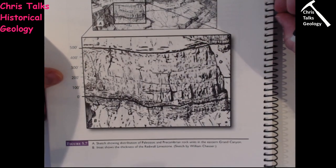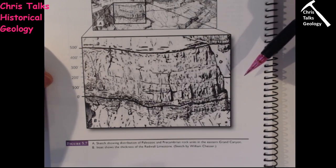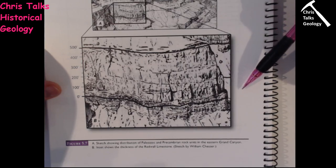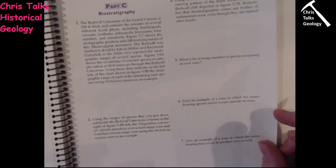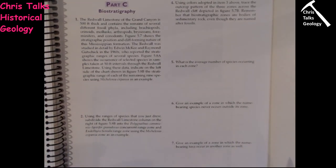Please try to use dark colours when colouring, because lighter colours and highlighters don't show up well on scanned or photographed images. For part five, count the average number of species occurring in each zone. Count how many species appear in each zone, add those three numbers together, and divide by three to get your average number of species per zone.